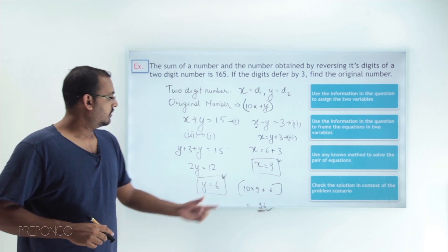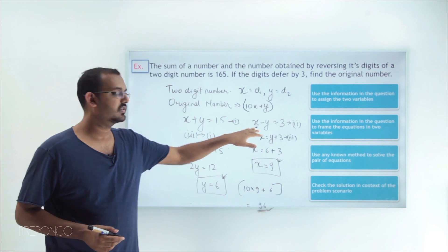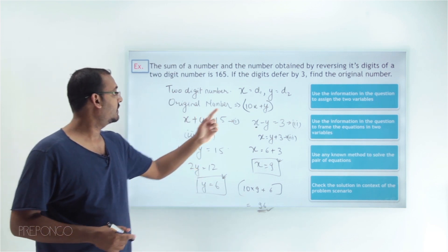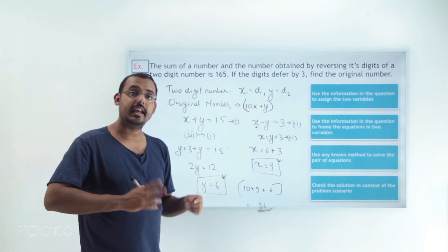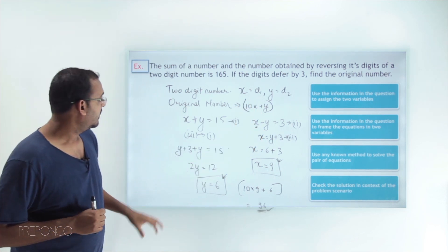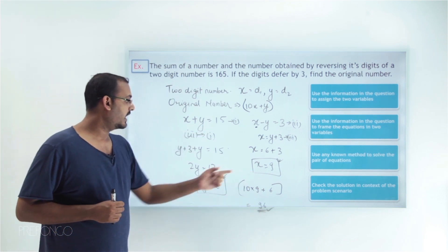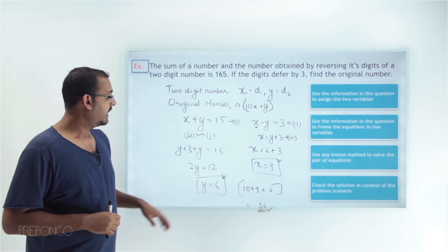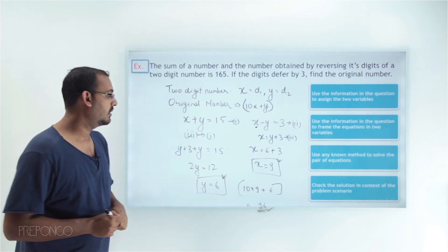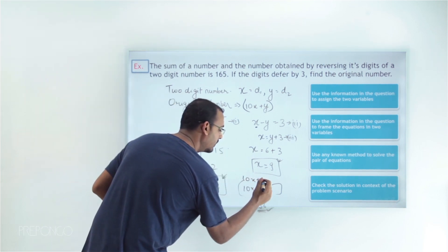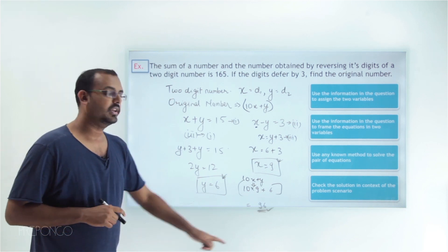Using the information given in the question, we formed a pair of linear equations in two variables, where x was the first digit and y was the second digit of the two digit number. We solved those equations to get x equals 9 and y equals 6. Using these values, we calculated the original number using 10x plus y, and the original number comes out to be 96.